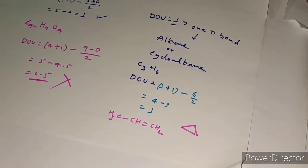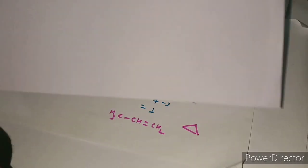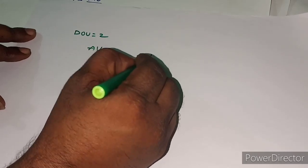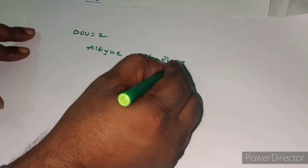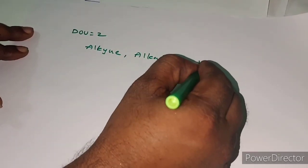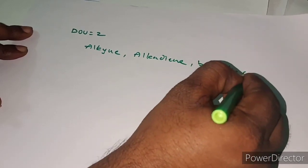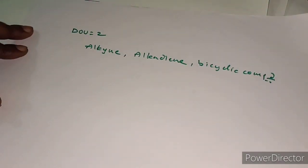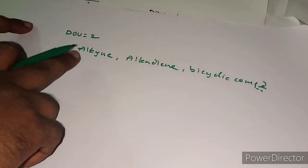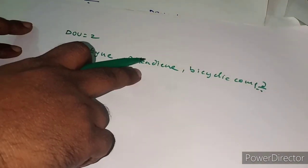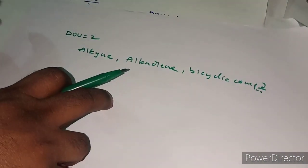If the degree of unsaturation is equal to 2, the compound can exist as an alkyne, or an alkadiene, or a bicyclic compound. Remember this — DOU = 2 gives three structural possibilities: alkyne, alkadiene, or bicyclic compound.